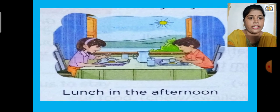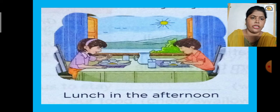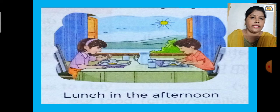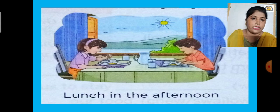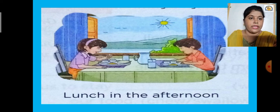Lunch is the meal we take in the afternoon. In school we have a lunch break, generally around 11:30 or between 11 and 12 for a morning school. Children in afternoon school, which runs from around 11 to 5, have lunch at about 1:00 or 2:00 o'clock. Whatever meal we take in the afternoon is called lunch. In the picture you can see the sun is directly above — that indicates it is lunchtime.